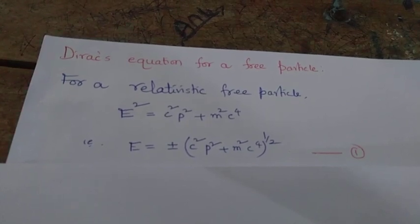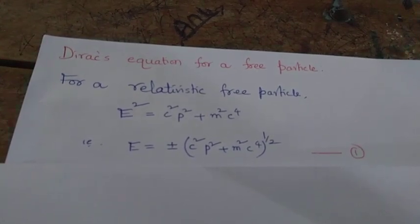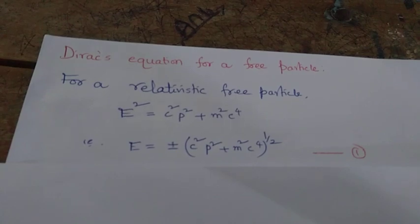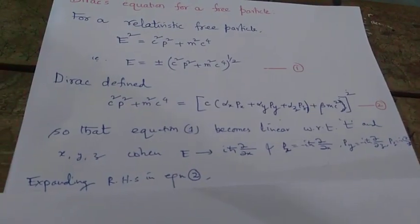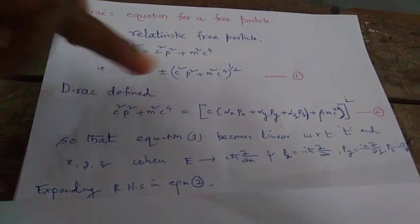If you rearrange that equation, we can write E = ±√(c²p² + m²c⁴), and we can call this equation number 1.